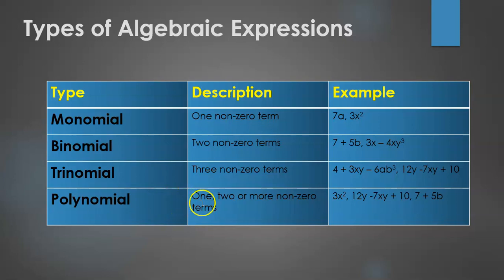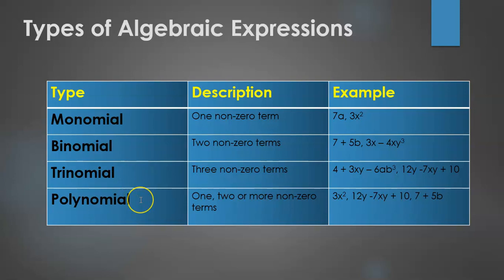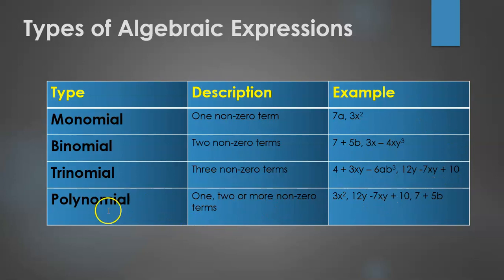A polynomial consists of one, two, or more non-zero terms. So a monomial is also a polynomial, a binomial is also considered a polynomial, and a trinomial is also a subset of a polynomial. For example, 3x squared and 3x minus 4xy cubed would all be considered polynomials by definition.